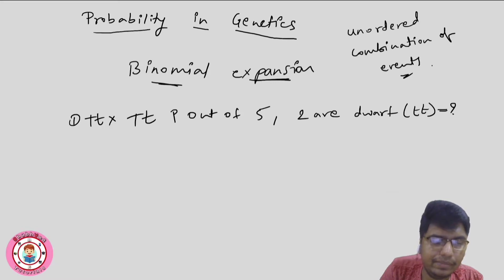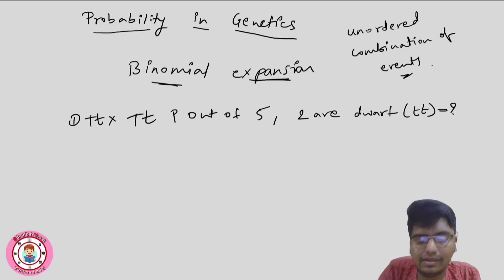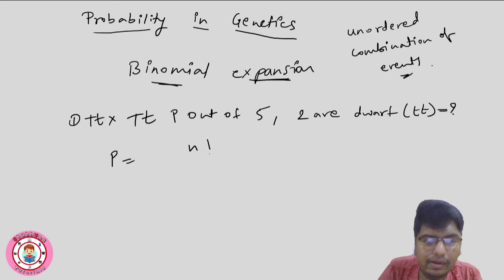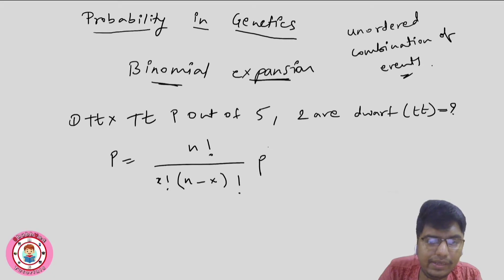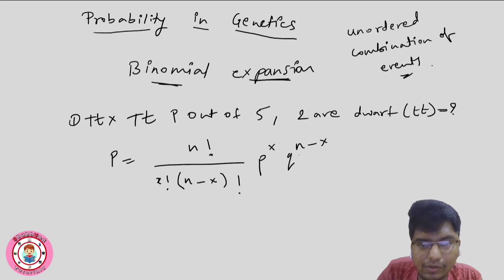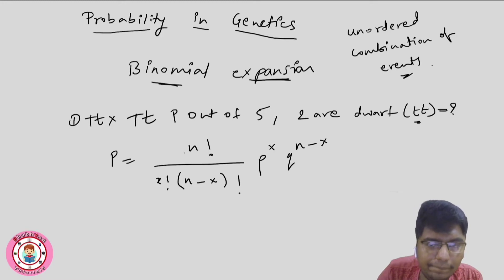The formula is: P = n! / (x! * (n − x)!) multiplied by p^x and q^(n−x). Here, n is the total number — so n = 5. x is the number of the specific outcome we want — so x = 2. p is the probability of x, and q is the probability of the other outcome.